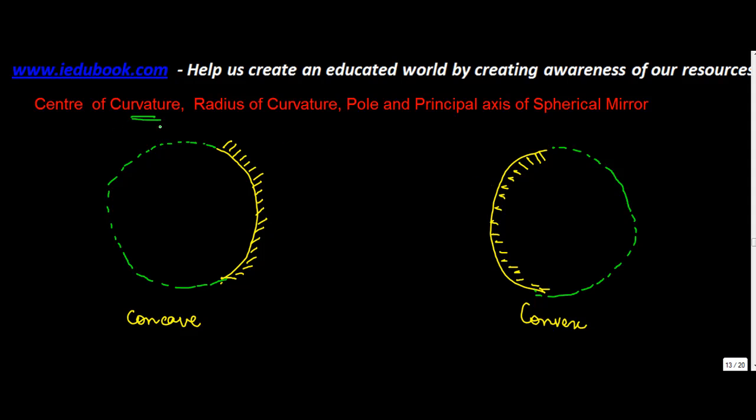Center of curvature. Now basically center of curvature is nothing but the center of this sphere. This is actually the center of the sphere of which this particular mirror is a part. So this point, let's call it point C, is known as the center of curvature.